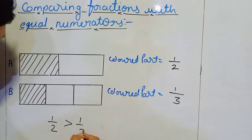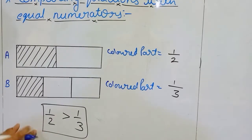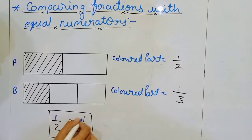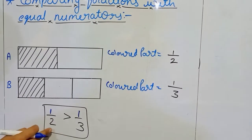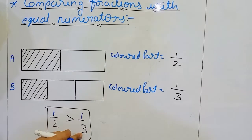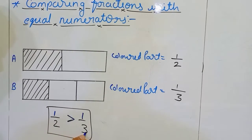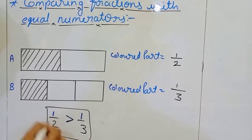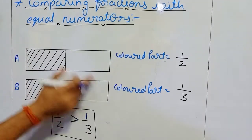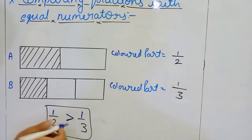So 1 upon 2 is greater than 1 upon 3. That means when deciding by the denominator — here we have equal numerators — we decide on the basis of the denominator. The smaller denominator gives the greater fraction. Here we have denominators 3 and 2. Even though 3 is numerically larger, 1 upon 2 is greater than 1 upon 3. So whenever we have equal numerators, the smaller denominator means the fraction is actually greater.